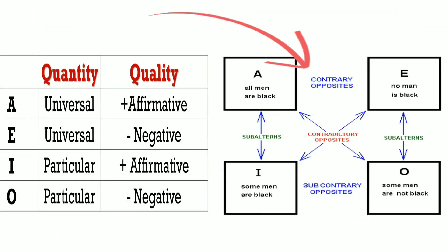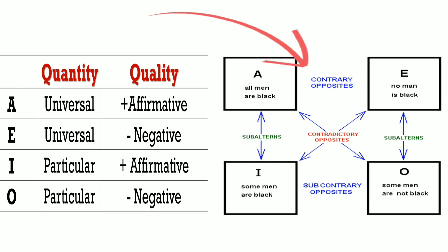Example: A proposition — A is universal affirmative. 'All men are black.' There is no negation, and the idea is universal. 'All men are black' — that is universal affirmative.